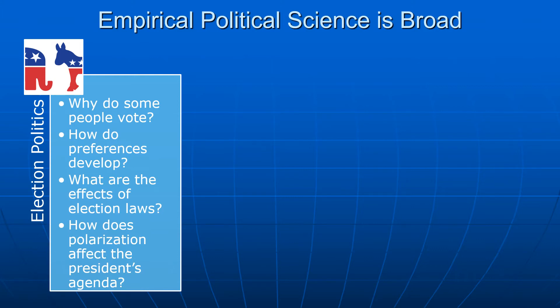Sometimes the questions about how preferences develop can be theoretical. For example, the very influential book An Economic Theory of Democracy by Anthony Downs develops a theory of preference formation, but doesn't test it. So when we're talking about empirical political science, we're talking about research that evaluates and assesses and tests ideas about how preferences develop, not just makes reasonable conclusions or arguments about how we think they might develop.